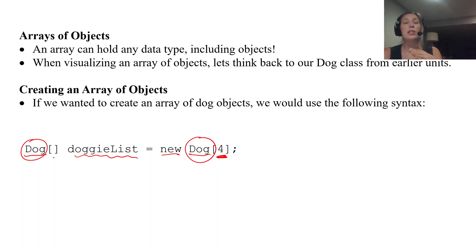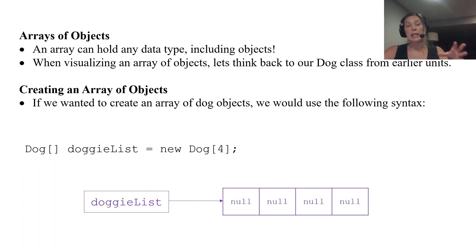Now what this looks like in memory: doggieList is my array reference and it's going to point to an array that has a length of four. Remember, with primitive types it's filled with the default value—the default for int is zero, the default for a boolean is false. But with reference types it's different. With a reference variable, it's filled with null. It's very important to know that when you do this,